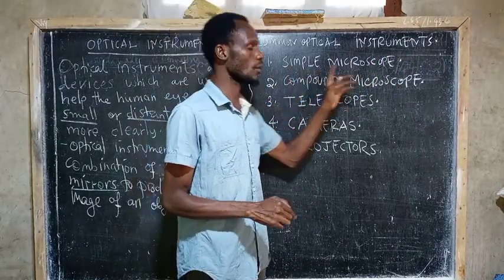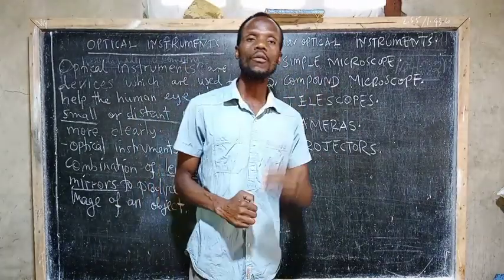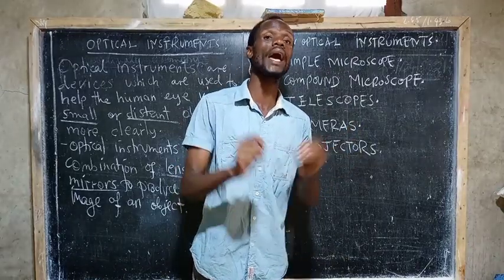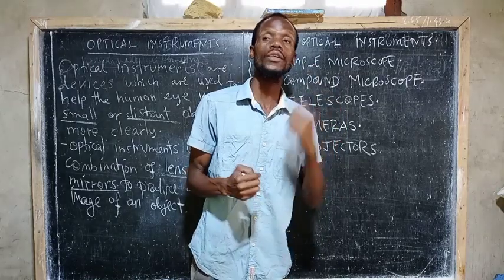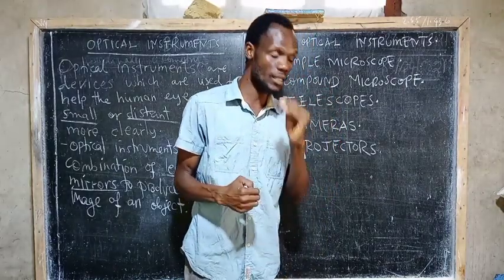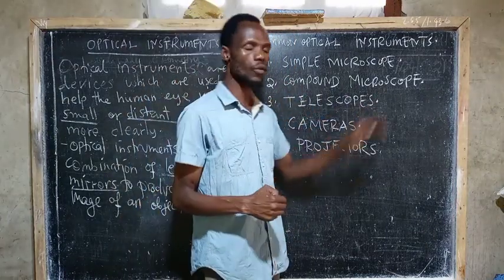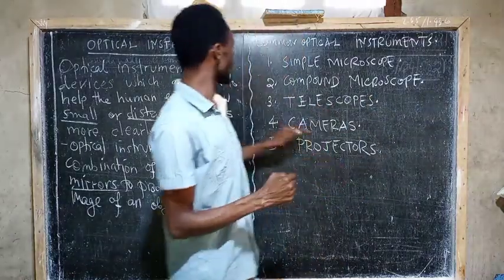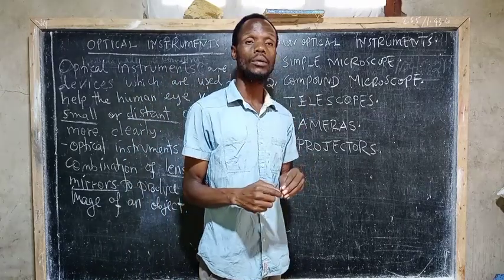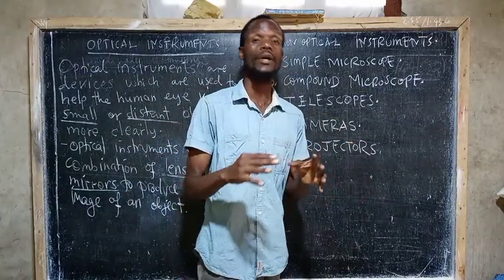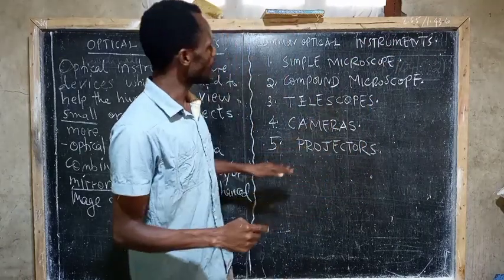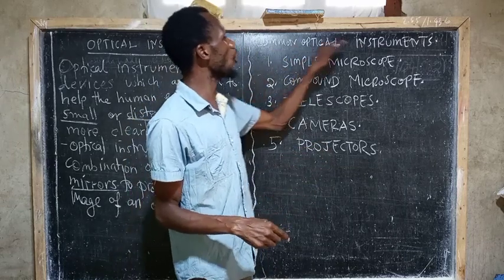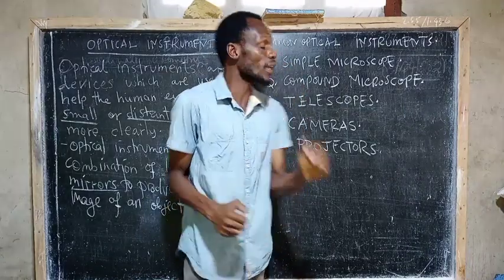One is a simple microscope, which is used in our daily life to enlarge objects so we can see them. We also have a compound microscope, used to magnify objects so we can see them clearly. The third one is a telescope, used in our daily life to see distant objects. We also have cameras and projectors. These are the common optical instruments we are going to discuss.